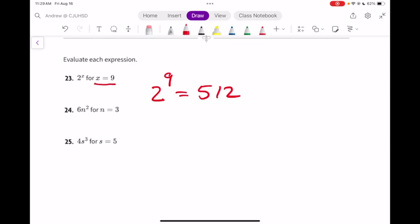6n squared. That would be 6 times 3 to the 2nd power. 3 to the 2nd power is 3 times 3, it's 9. So 6 times 9, and 6 times 9 is 54.